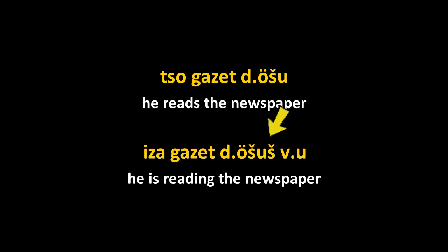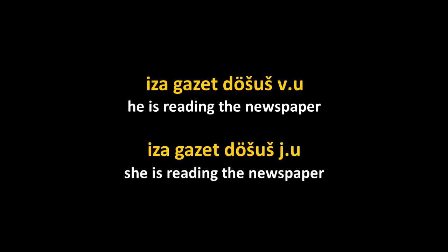Then you add the verb 'to be' — vu, bu, or yu — to get the present progressive 'to be reading.' So 'he is reading the newspaper' is isa gazet dershush vu. Notice the word 'he' goes back to the absolutive form isa. Why not ergative? Because in the present continuous we have a double absolutive: both subject and object stand in the absolutive. The main verb dershush agrees with the object (D prefix for gazet), but the auxiliary verb has the V prefix agreeing with the masculine subject isa.